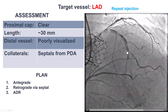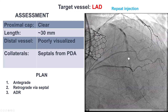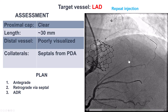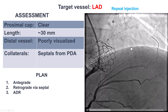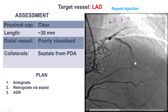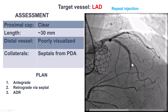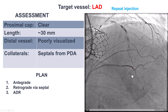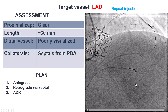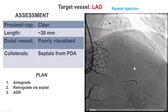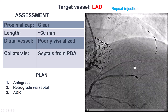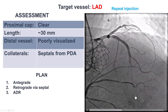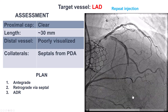We do have a CTO of the mid-LAD. It has a well-defined proximal cap. There is heavy calcification within the LAD. The distal vessel is filling through collaterals, mainly from the right coronary artery. The CTO is about 30 millimeters, and the distal vessel is diffusely diseased.